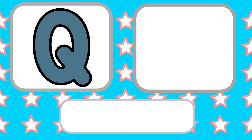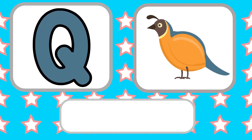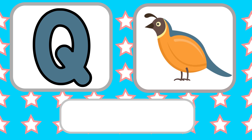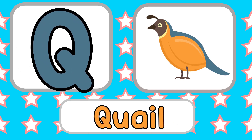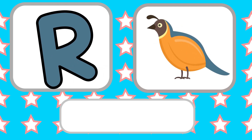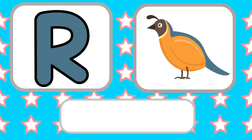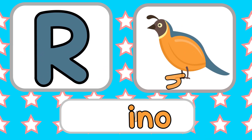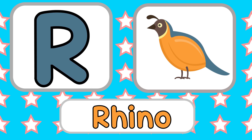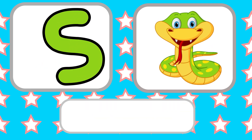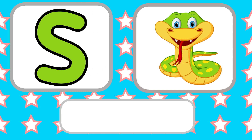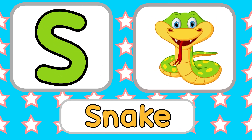Q is for Quail. Q, Q, Quail. Q, Q, Quail. R is for Rhino. R, R, Rhino. R, Rhino. R, Rhino. S is for Snake. S, S, Snake. S, S, Snake.